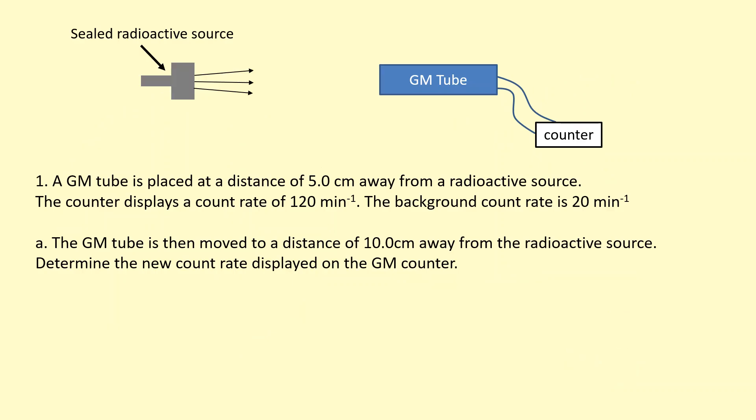In this example, we have a GM tube which is placed at a distance of 5.0 cm away from a radioactive source. The counter displays a count rate of 120 min⁻¹. The background count rate is 20 min⁻¹. The GM tube is then moved to a distance of 10.0 cm away from the radioactive source, and now we determine the new count rate displayed on the GM counter.